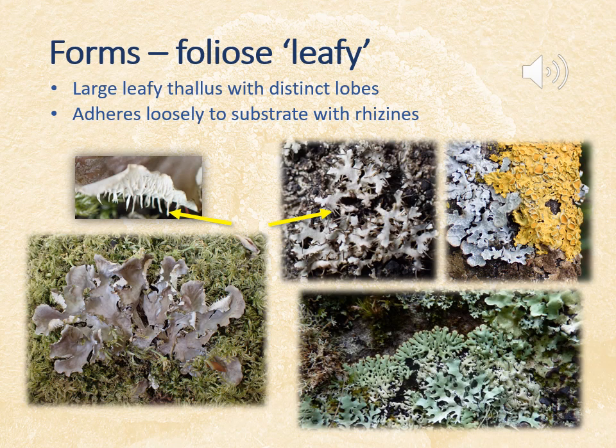The next type are the foliose or leafy lichens. These have numerous leafy lobes that are anchored to the surface with rhizines, and are usually more loosely attached than crustose lichens. They also have multiple points of attachment to a surface. The rhizines are often underneath, but they can be exposed when the lobes are curled and sometimes stick out at the very tips.